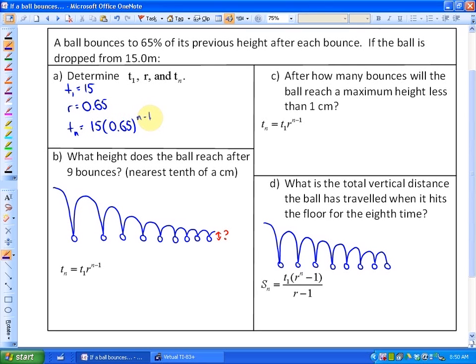So if you look at this next problem, the extension says, what height does the ball reach after 9 bounces? So this is a general term problem. We're not finding the sum of all the bounces. We're finding after 9 heights, so here's 1, 2, 3, 4, 5, 6, 7, 8, 9. After 9 bounces, what's the height of the ball? It says to the nearest tenth of a centimeter.